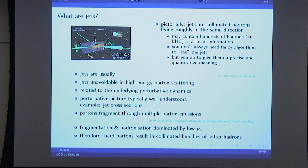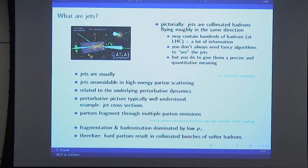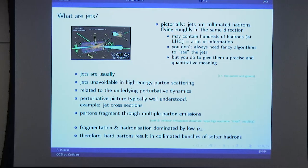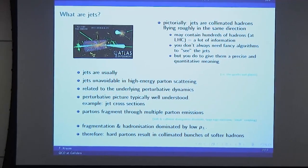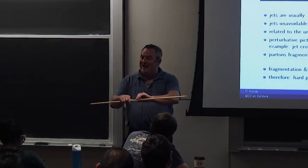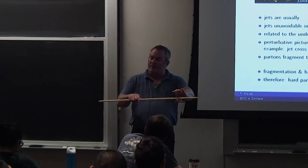So jets are just lots of hadrons that are more or less populating the same phase space — the same space in the detector. The underlying perturbative picture is that you have multiple emissions. You start with a quark; the quark starts emitting gluons, dω/ω, dk perp/k perp; the gluons may continue emitting further gluons, dω/ω, dk perp/k perp. So you get a cascade of stuff that gets softer and softer and is typically more and more collinear.